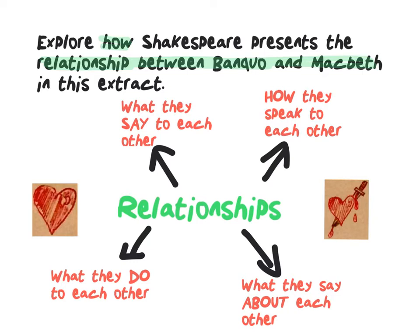Well, my jazzy little mind map here offers a few ways that we could respond to this question. We could think about what they say to each other — what's that really revealing about each character's thoughts and feelings towards the other? We could also look at how they speak to each other. We'll look later at the term the royal we — that tone or mode of address can be significant. We can think about what they do to each other — actions reveal relationships. And, of course, we can think about what they say about each other, not necessarily to each other, but about each other. That sheds light on a relationship too.